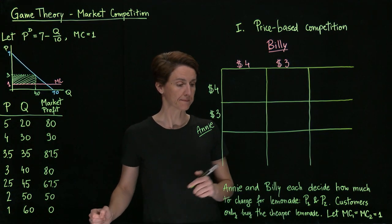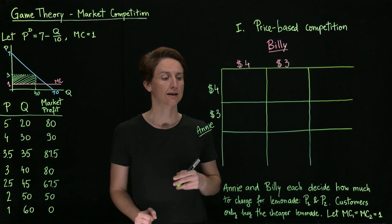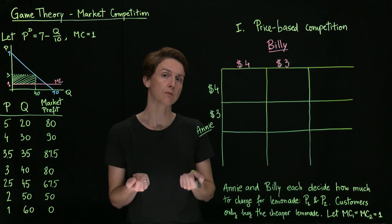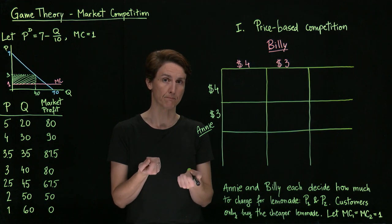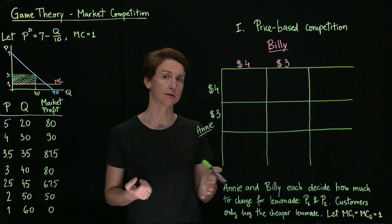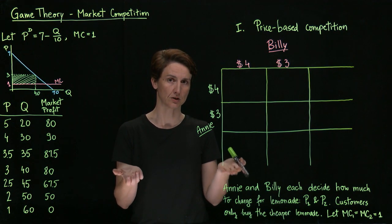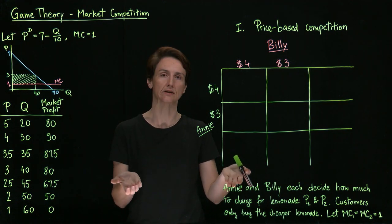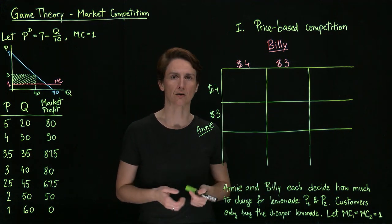Let's now turn to Annie and Billy. Suppose that their options are to charge either $4 per glass or $3. We'll also need to assume something about how exactly competition happens in this market — what do consumers respond to when they decide who to buy from? We'll first work with a model where competition is driven entirely by price, so that customers will consider the two prices and buy whichever lemonade is cheaper, and then that seller will be able to sell to everyone who's interested in buying. Under that assumption, let's fill out the payoffs in this table.